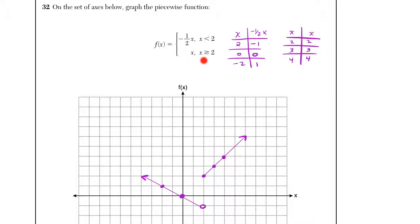Now for the bottom function, very simple rule here of x. So whatever your input is, the output's going to be the exact same. So I chose 2, 3, 4, because it is greater than or equal to 2, and the outputs are 2, 3, 4.